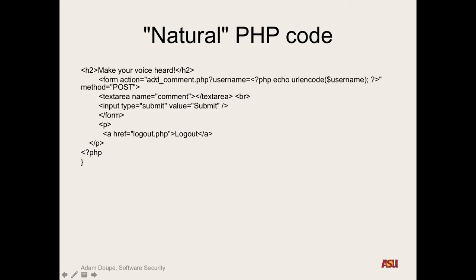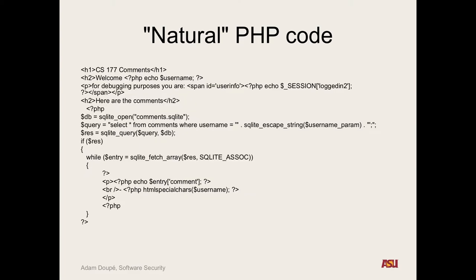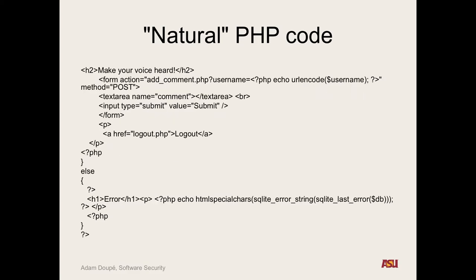Continuing on: the form would say to add a comment, we make an action here, put the username in, have the text field, a text area which gives the input box, and at the end I still have to have an error check for if something went wrong retrieving from the database. Hopefully you've been programming long enough to look at this and be viscerally disgusted — this is not the way to write a maintainable, sustainable application.